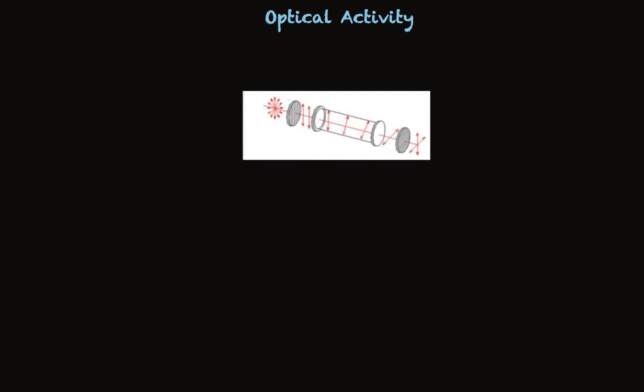But because plane-polarized light is itself physically chiral, the enantiomers interact with plane-polarized light in equal strength but rotate that plane in opposite directions. Let me show you what I'm talking about.